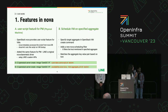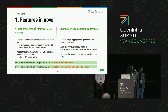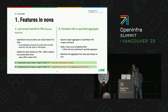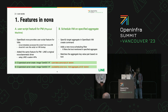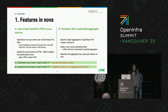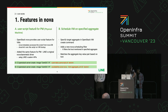I'll talk a little bit about Nova. Nova is one of the OpenStack components, and these are two features that we contributed. One of them is the user script feature for PM — PM is a physical machine, it's a LINE-original Nova bare metal driver. The user script feature is something OpenStack provides for VMs: you can provide a user script which will be run at VM boot up. We implement exactly this feature for physical machines. The second one is scheduling VMs on specified aggregates — by specifying an aggregate, as shown in command B, we can schedule a VM in the specified aggregate, achieved by adding a new filter that matches the key-value pair.